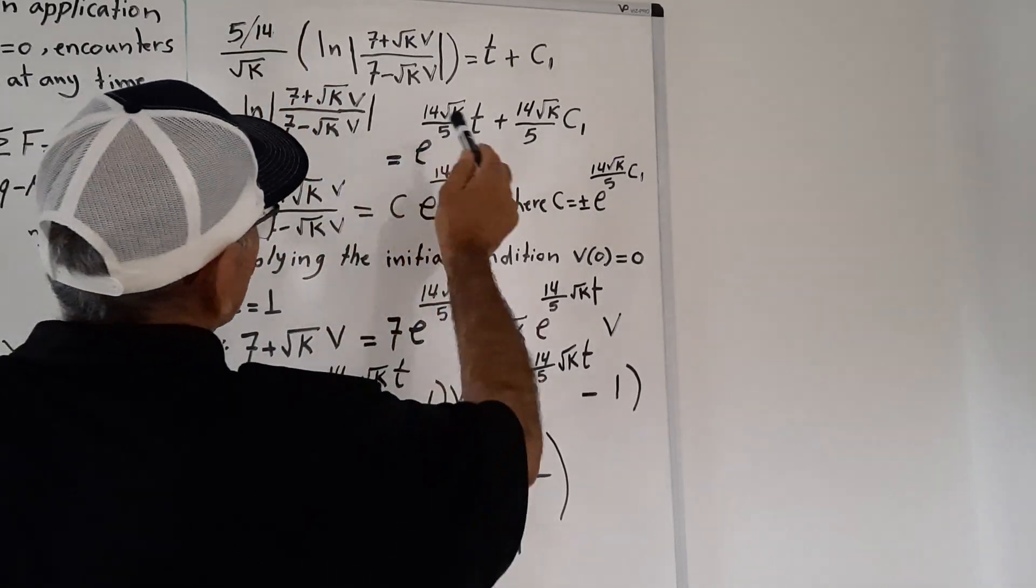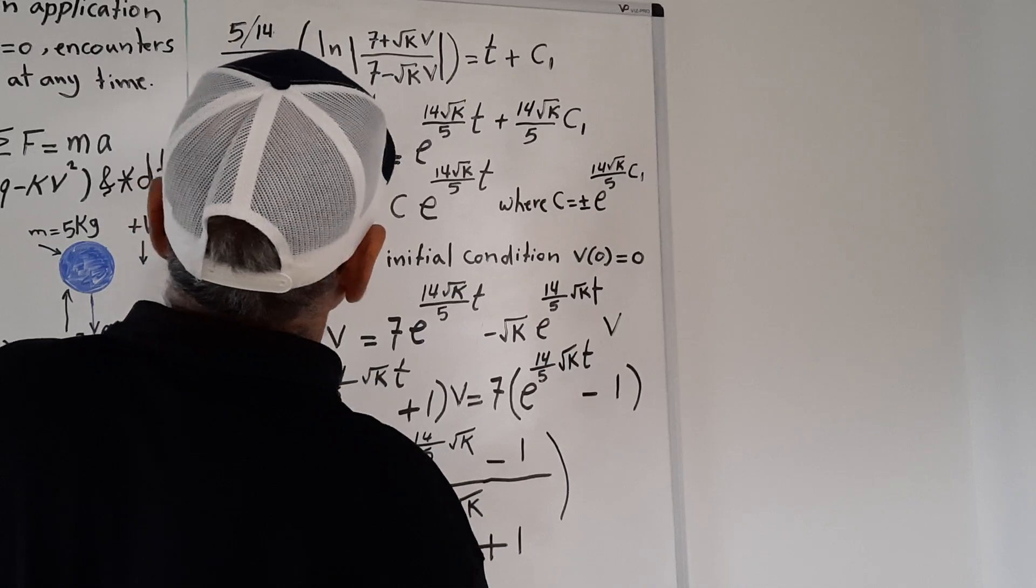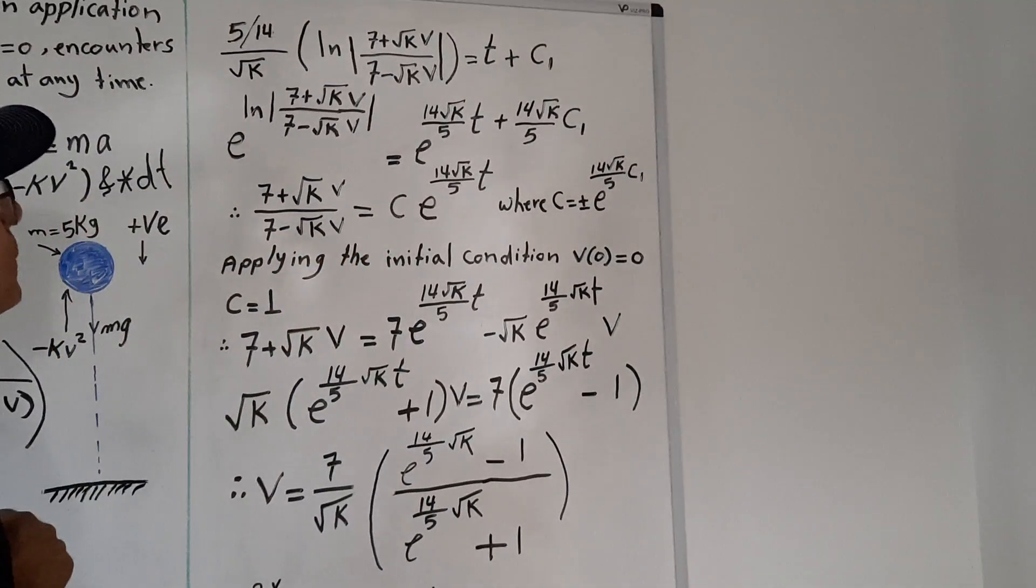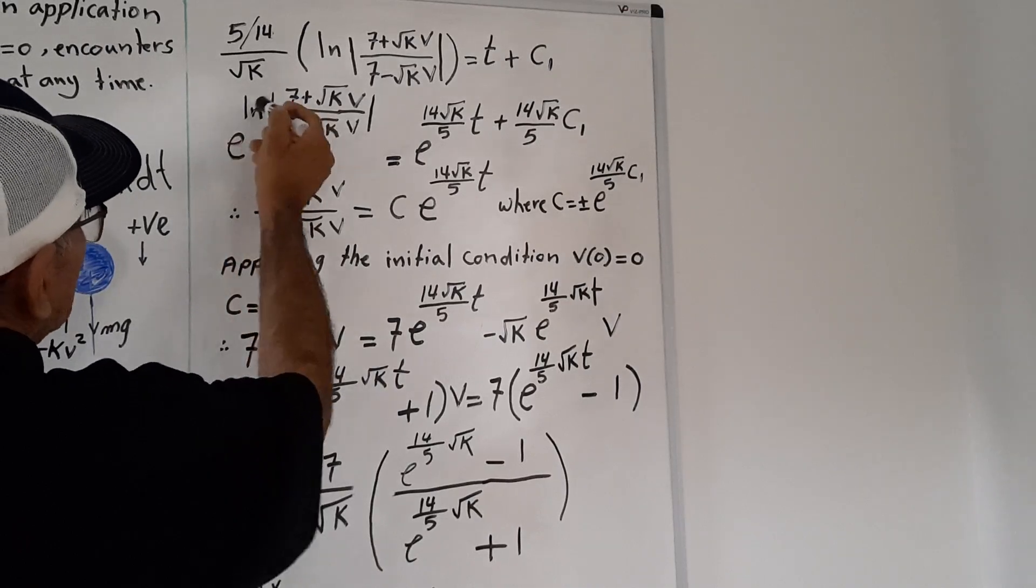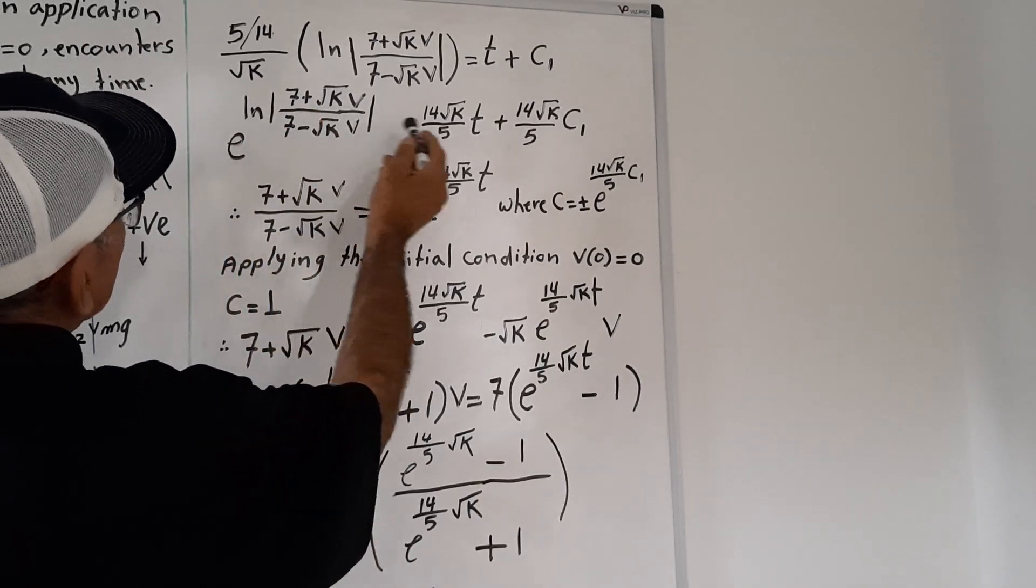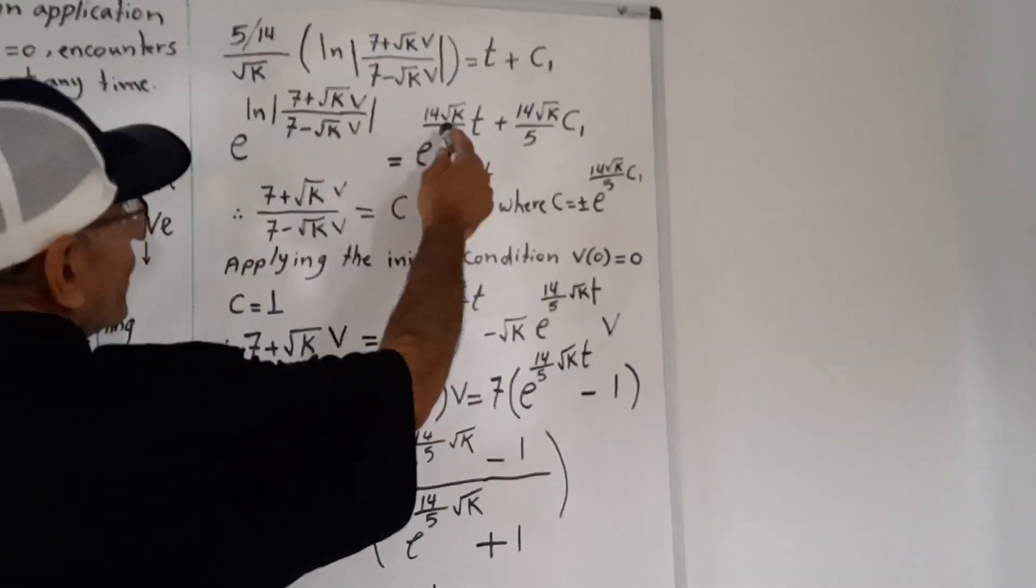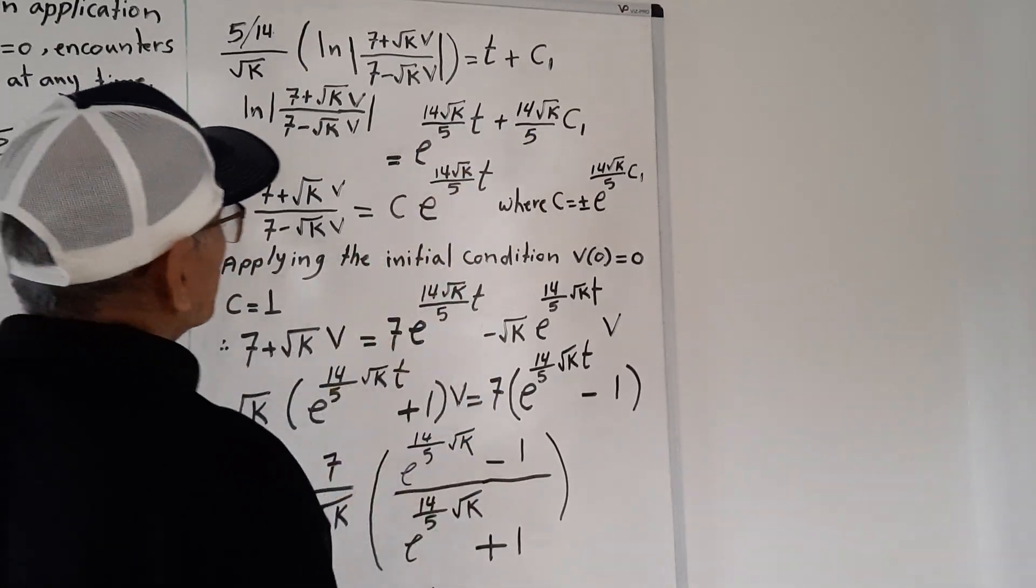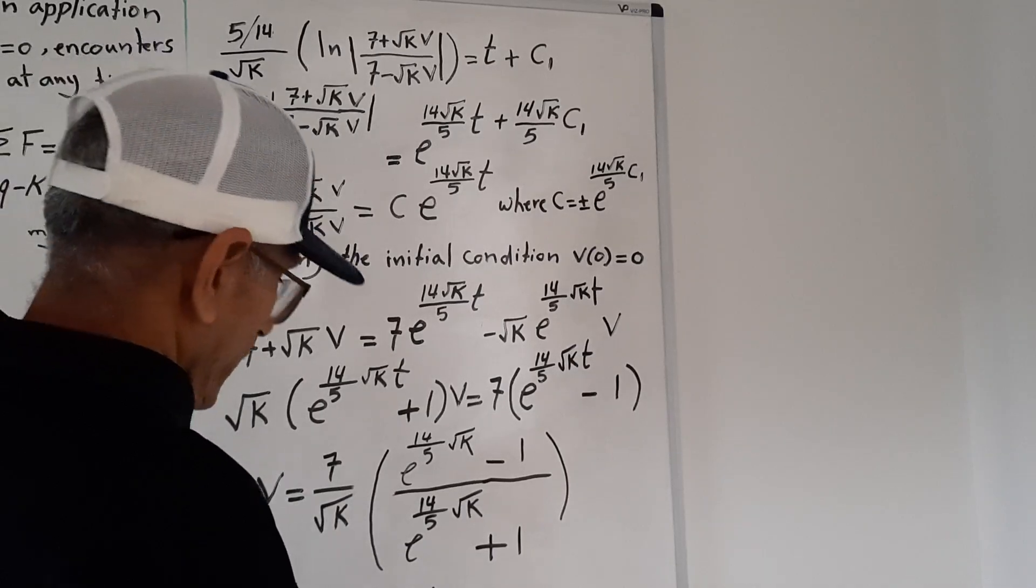Then we raise this equation, both sides of the equation, to the base e. So we will see e to the ln equals e to the 14 root square k over 5 times t plus C.